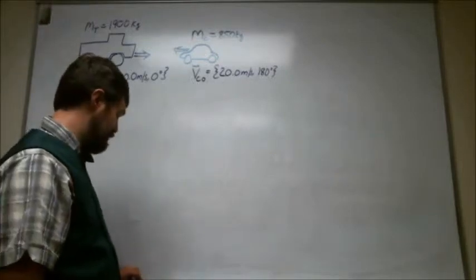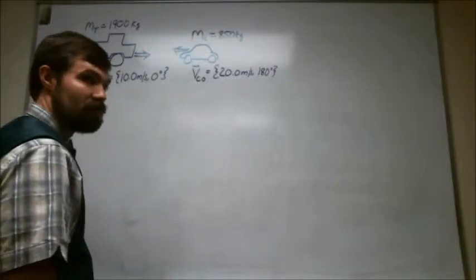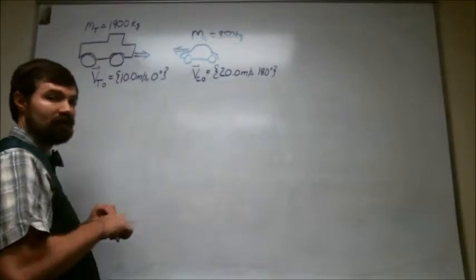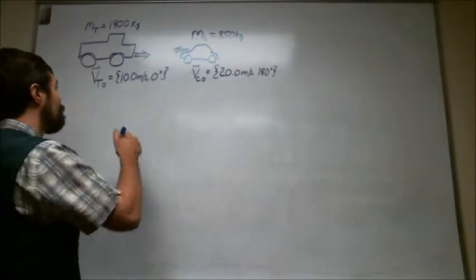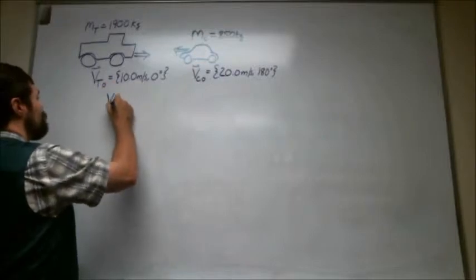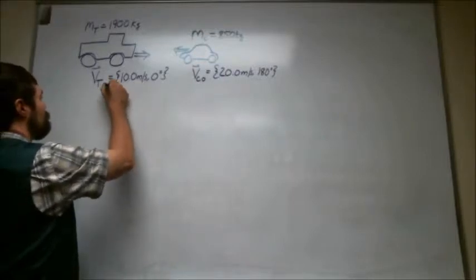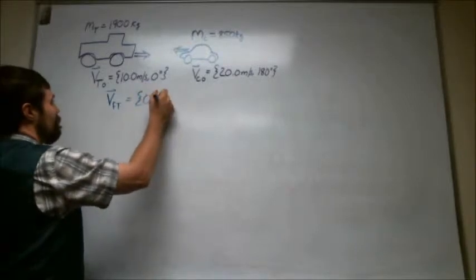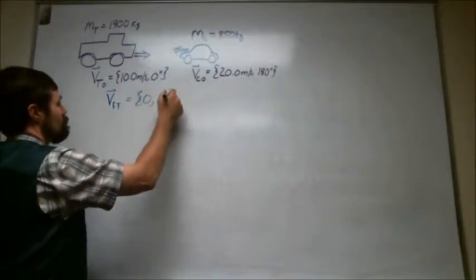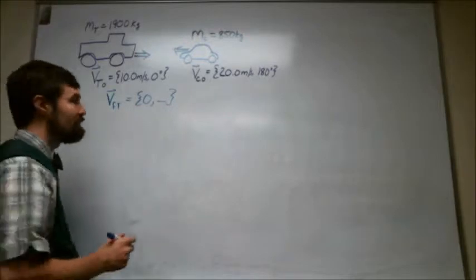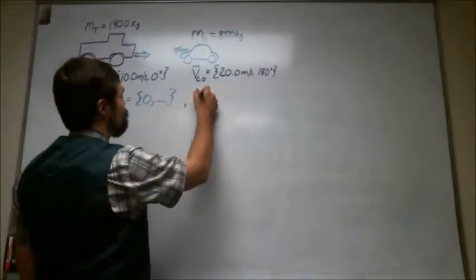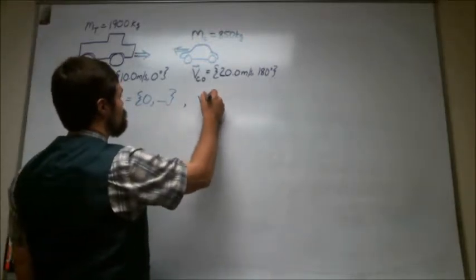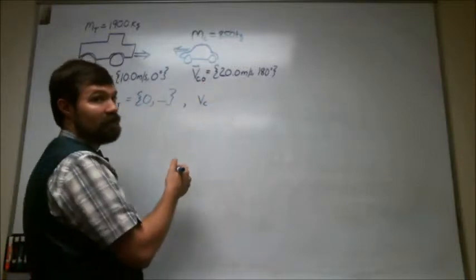Let's say that after the collision the truck comes to a stop, so the final truck velocity is equal to zero. So it's stopped, and we want to know what is the final speed of the car.